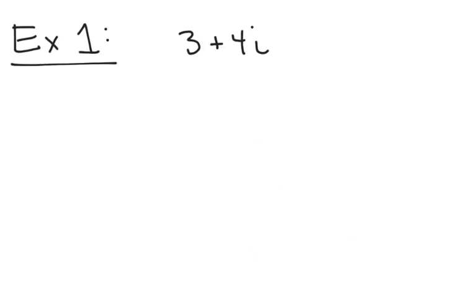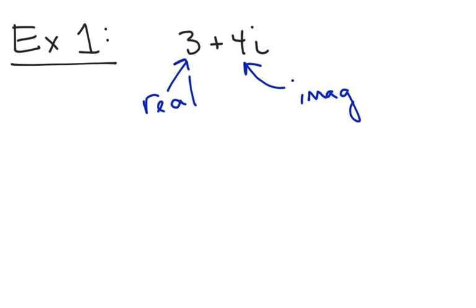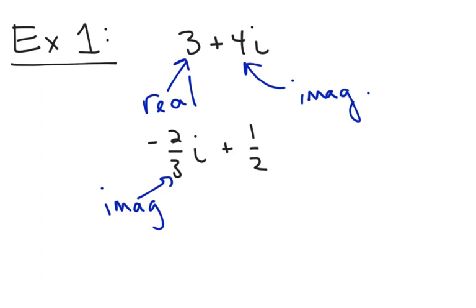In our first example, in the complex number 3 plus 4i, the real part is always the part without the i, and the imaginary part is the part that has the i. It doesn't matter in what order this is written. For example, if I give you negative 2 thirds i plus 1 half, then negative 2 thirds is the imaginary part and 1 half is the real part.